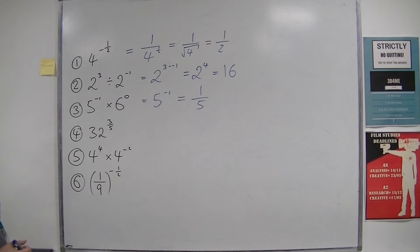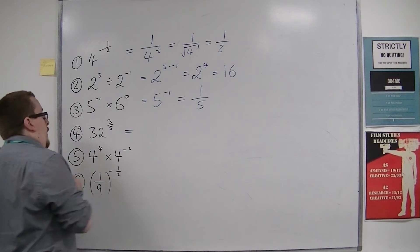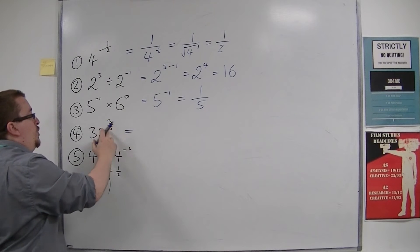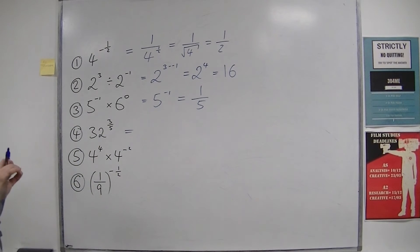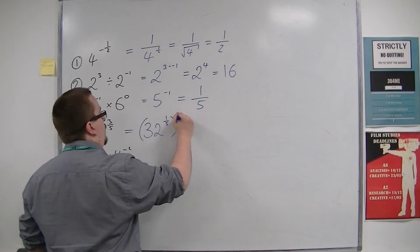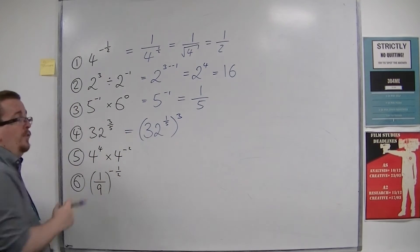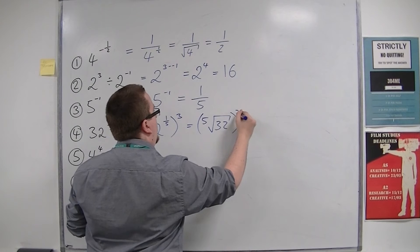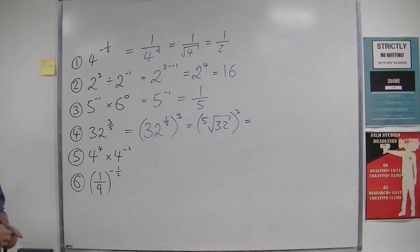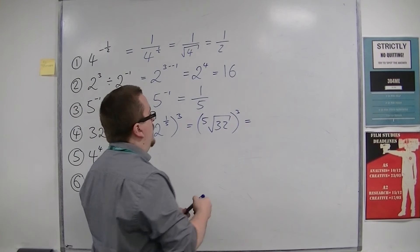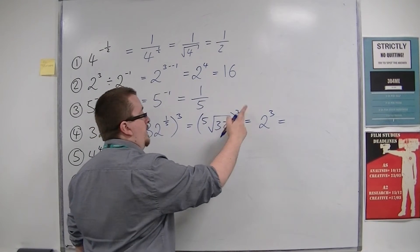Number 4, we have 32 to the power of 3 fifths. Now in these types of problems, break it down into either doing the 1 fifth first or the cube first. Usually, doing the fraction first is the best way to go. So I'm going to write that as 32 to the power of 1 fifth to the power of 3, because 3 times 1 fifth makes it 3 fifths. So you can split the fraction apart like that. So we need to find the fifth root of 32 and then put that to the power of 3. So the fifth root of 32 is actually 2: 2, 4, 8, 16, 32. So that's 2 cubed. So 2 to the power of 3, which is 8.